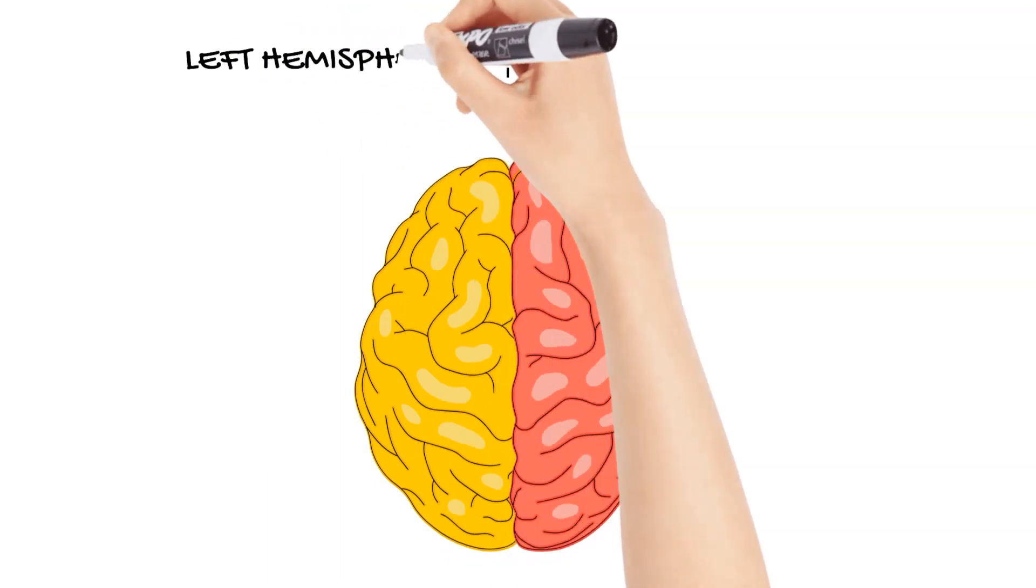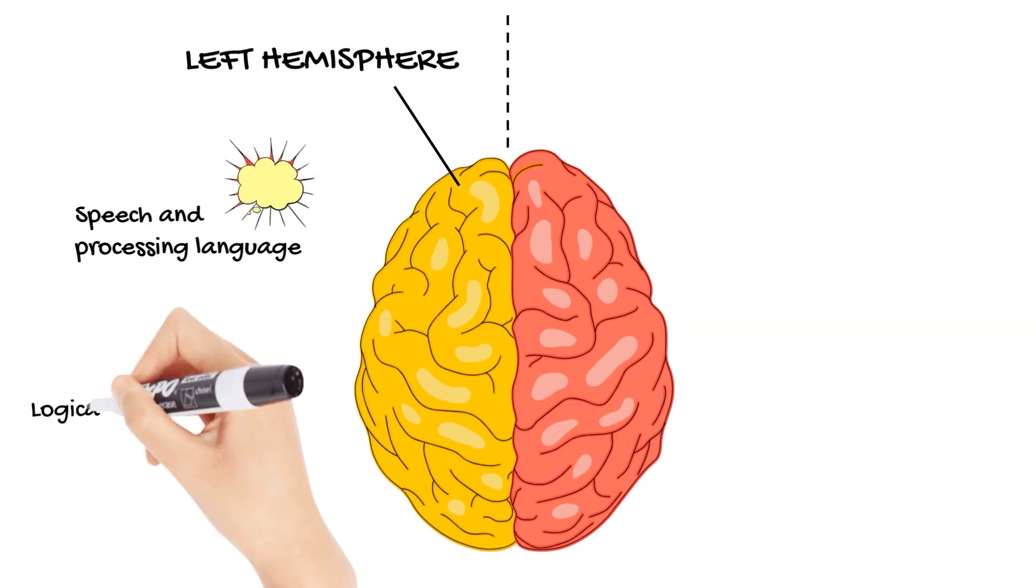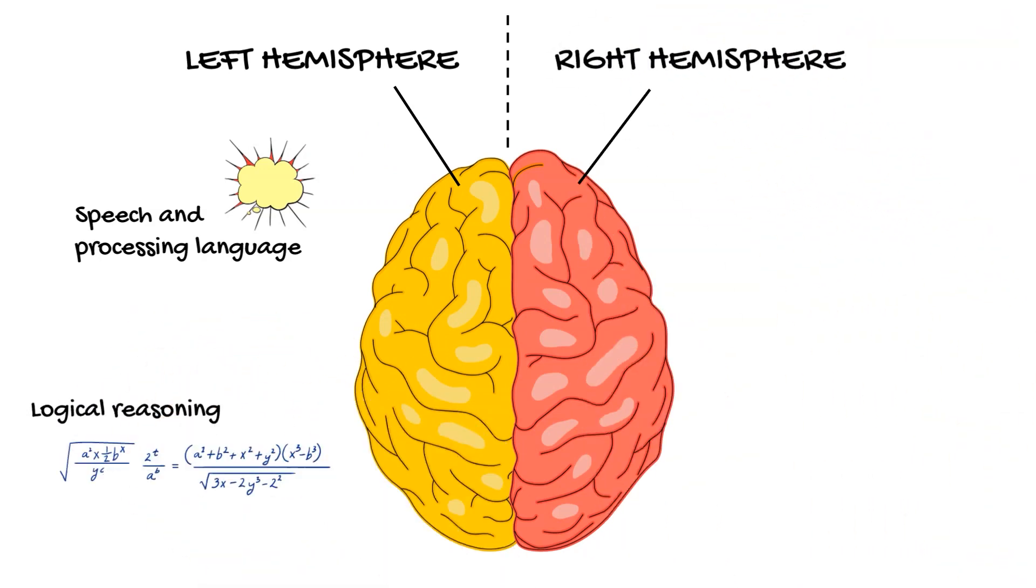Dominating the landscape of the brain is the cerebrum, split into two hemispheres, each responsible for specific functions. The left hemisphere excels in logical reasoning and language, while the right hemisphere governs creativity and spatial ability.